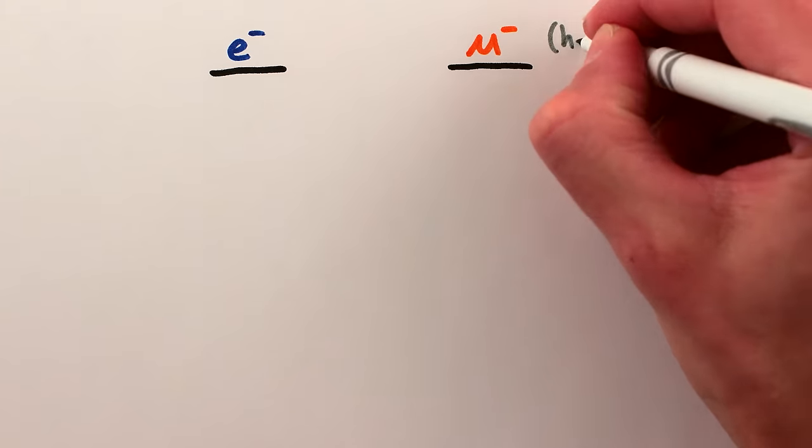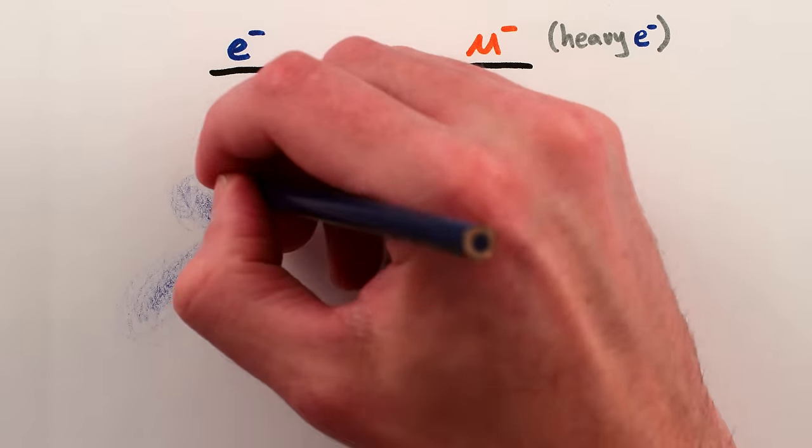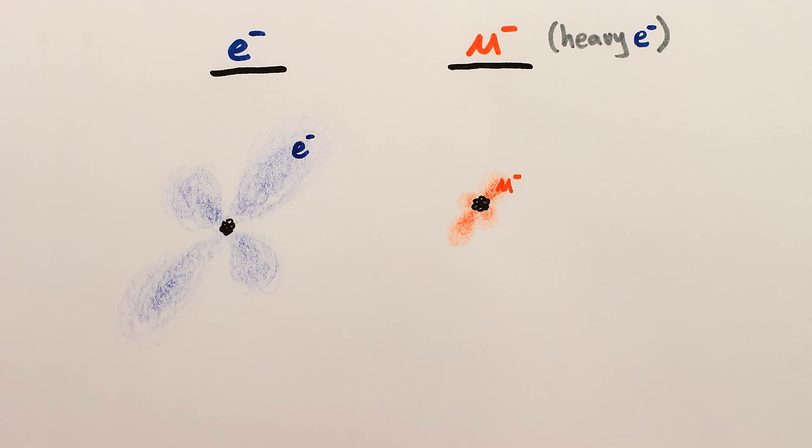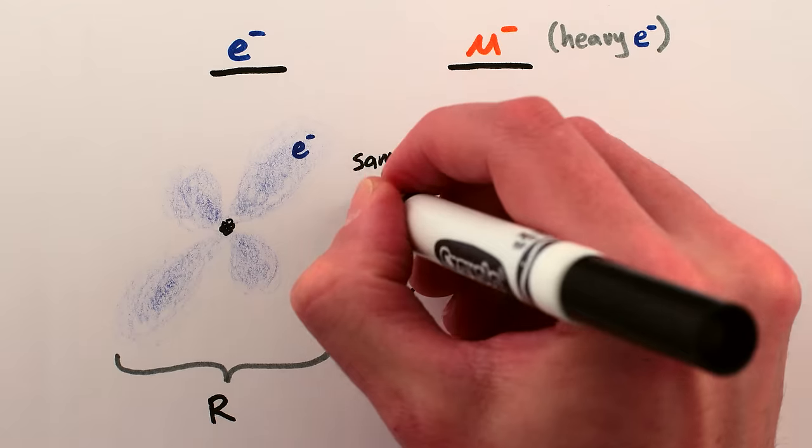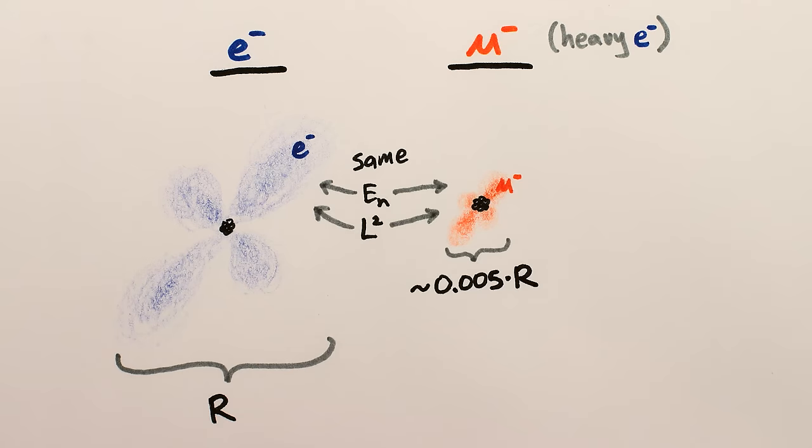Muons, being essentially heavy electrons, form atoms and molecules in almost the exact same way as electrons, but since they're heavier, their orbits are much closer to the nucleus than an electron with the same energy and angular momentum would be.